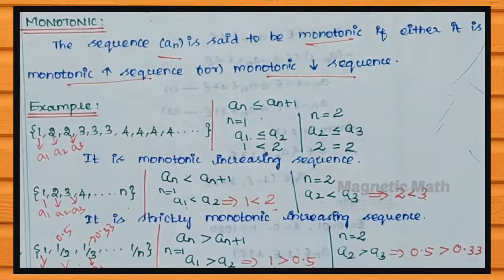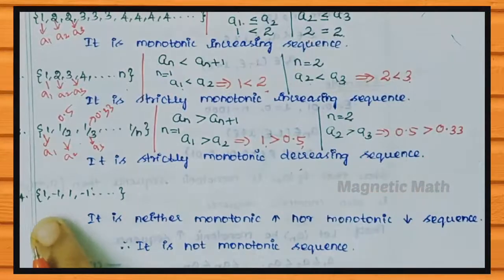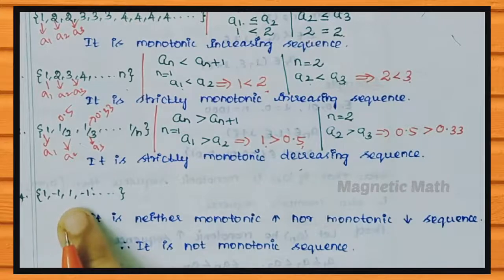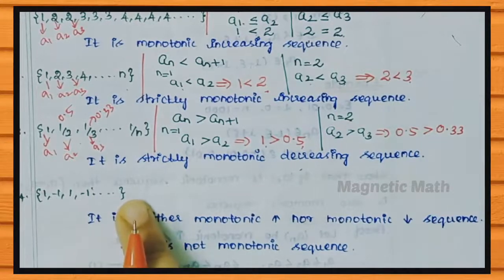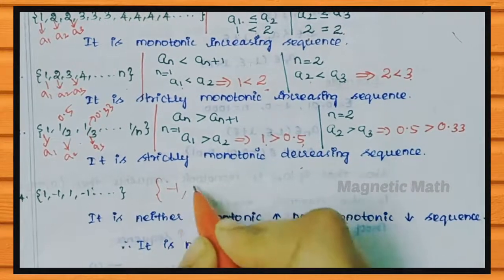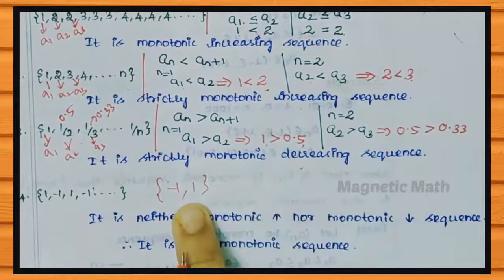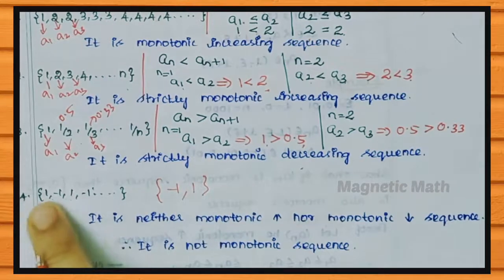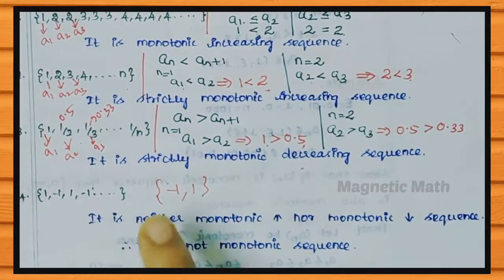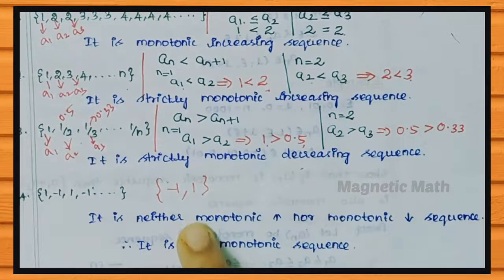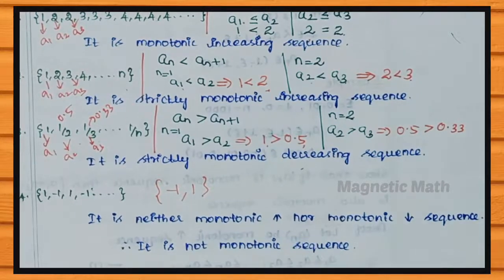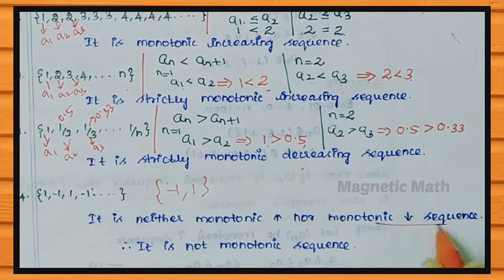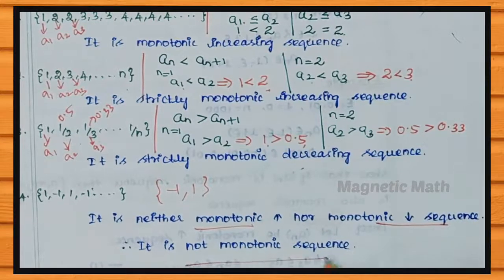Example 4: the sequence is 1, -1, 1, -1, ... This is an oscillating sequence alternating between -1 and +1. It is neither increasing nor decreasing, therefore it is not a Monotonic Sequence.